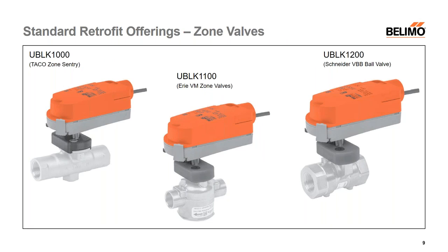Next we come to our zone valve retrofit kits — a relatively new area of business for us in the retrofit department. We have three standard kits that we opened simultaneously. On the far left is the UBLK-1000, specific to the TACO zone sentry valve. In the middle is the UBLK-1100, specific to the Erie VM zone valve. On the far right is the UBLK-1200, specific to the Schneider VBB ball valve. These are our standard retrofit kits for zone valves.